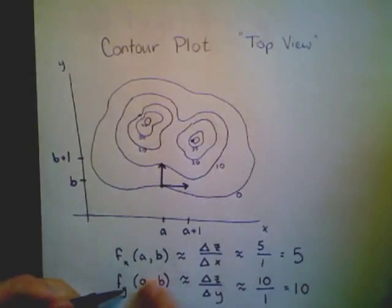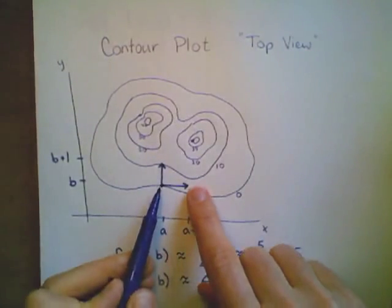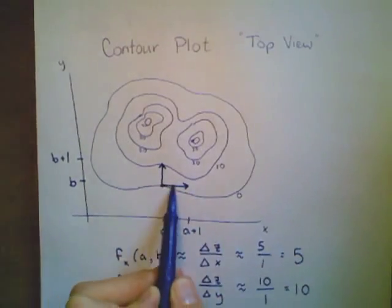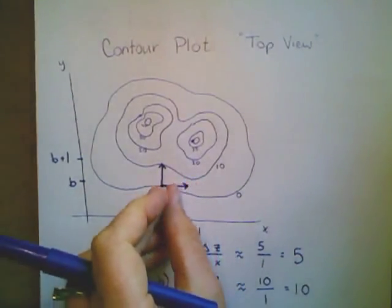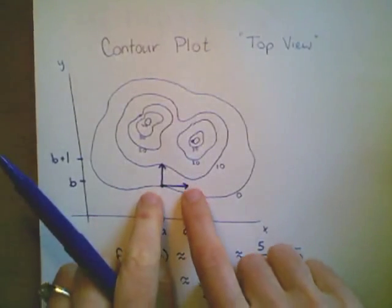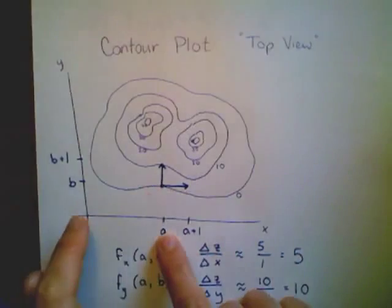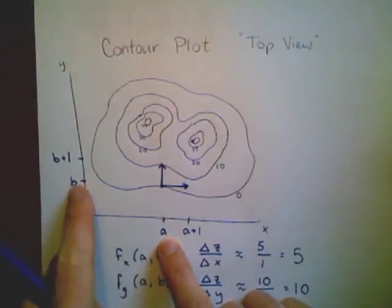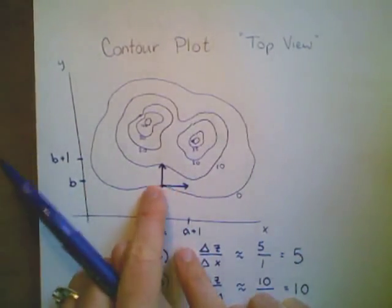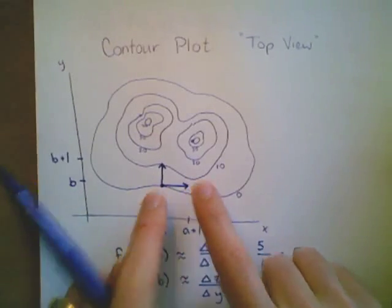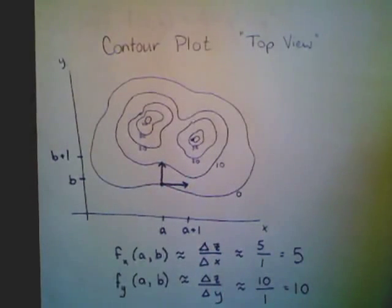I say that these are approximations because the actual partial derivative is going to be the limit — I look at this vector getting smaller and smaller, looking at the rate of change more and more accurately until I get right at that point. If I evaluate the actual partial derivative at (a, b), it gives me just the slope of the tangent line right at that point, rather than the approximation over this one unit of distance.